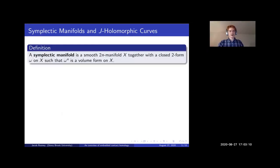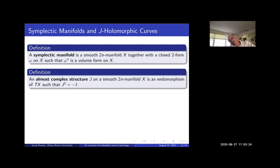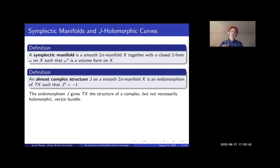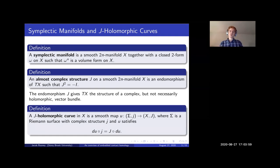So let's set the stage. A symplectic manifold is a smooth, even-dimensional manifold together with a closed two-form whose top exterior power is a volume form. And these J-holomorphic curves rely on a choice of almost complex structure, which is just something that looks like multiplication by i. So it's an endomorphism of the tangent bundle that squares to minus the identity. The difference is that we don't require that this be integrable, meaning this J will give the tangent bundle the structure of a complex bundle, but not necessarily a holomorphic vector bundle. And what is a J-holomorphic curve? Well, it's a smooth map from a Riemann surface into your manifold, whose differential intertwines the complex structure on the Riemann surface with the almost complex structure on the target.